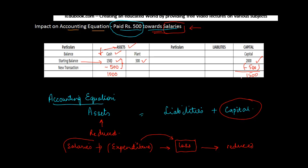If you are unable to identify the logic, the fact is that if the asset side gets reduced, assuming the accounting equation holds true, the liability side should also be reduced. When you pay salaries in cash, you don't need to make any further payment to anyone, so the only account left to be impacted is capital. Capital should be reduced by 500 — if assets are reduced by 500, the liabilities side also has to be reduced by 500.